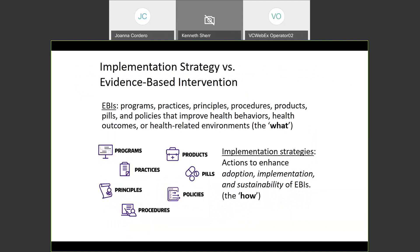Just a bit on terminology — there is a difference between evidence-based interventions and implementation strategies. Interventions are those programs, practices, principles, procedures, products, pills, and policies that improve health behaviors, health outcomes, or health-related environments — that's the what. Implementation strategies are those actions to enhance the adoption, implementation, and sustainability of evidence-based interventions — that's the how. In this framework, I would put social accountability programs as an implementation strategy — really figuring out how to best lead to improved uptake and sustained use of evidence-based interventions through complex processes, as we heard in the realist evaluation talk.